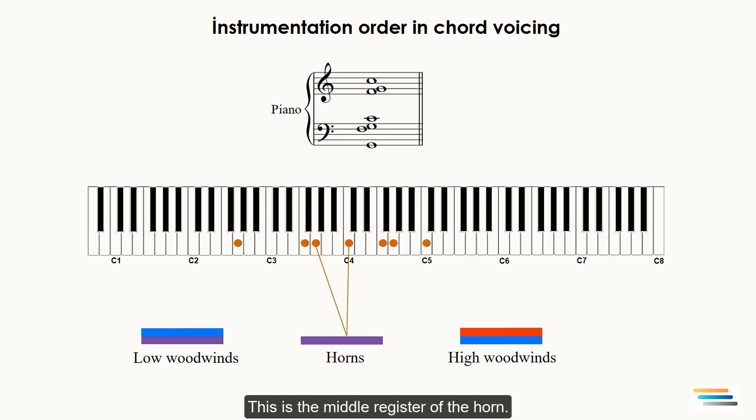Then I am going to complete the lower portion of the chord. The low G and F will be played by two bassoons. Of course, depending on the chord and your choice, other low woodwind instruments also can be used.